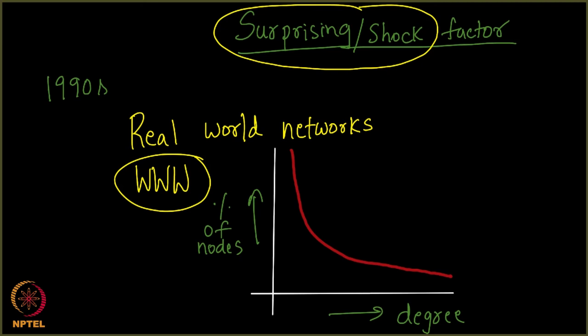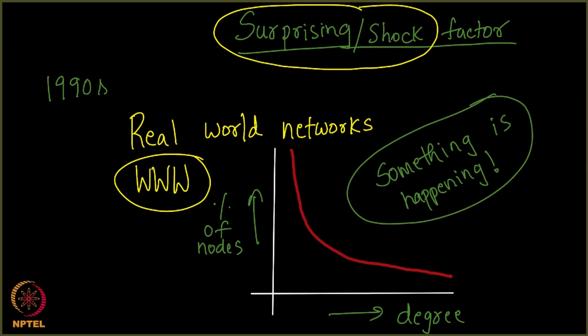Something should have gone wrong. Similarly, when scientists observed the drop of the curve like this, which is no way close to the bell curve, people thought something must be happening here that we don't seem to understand. What does this even mean? You see, there are a lot of nodes with very low degree and very few nodes with very high degree, that is what it means.